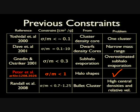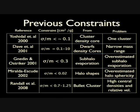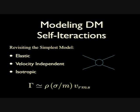Based on this, we decided to revisit the simplest self-interacting model: elastic, velocity-independent, and isotropic scattering. While some had suggested velocity-dependent cross-sections to be strong in dwarf halos but weaker in cluster halos with high velocity dispersions, we went with the simplest model. For this model there is only one free parameter. The scattering rate is determined by the cross-section per unit mass — which I'll refer to as sigma over M — along with the densities and velocity dispersions. There is only one knob in the simulations: this cross-section per unit mass.